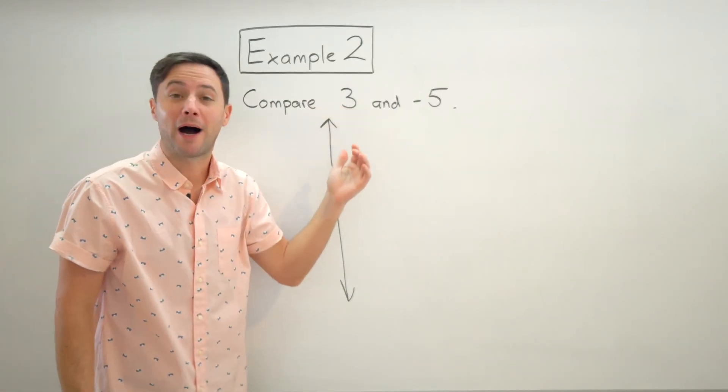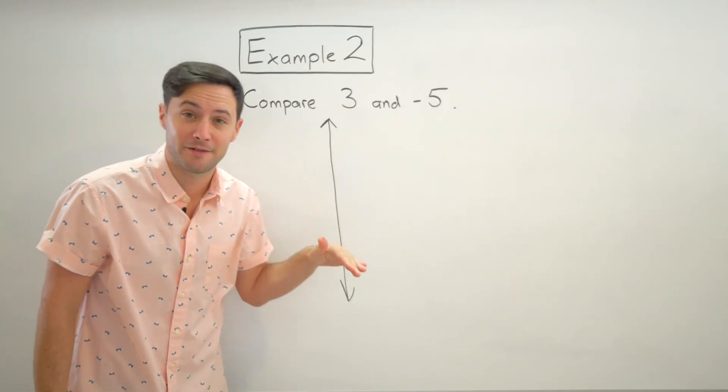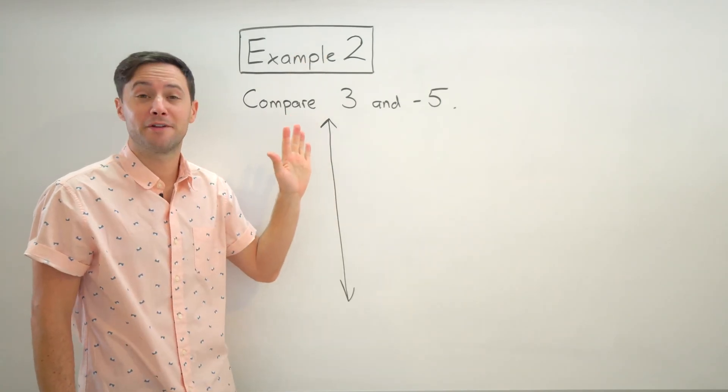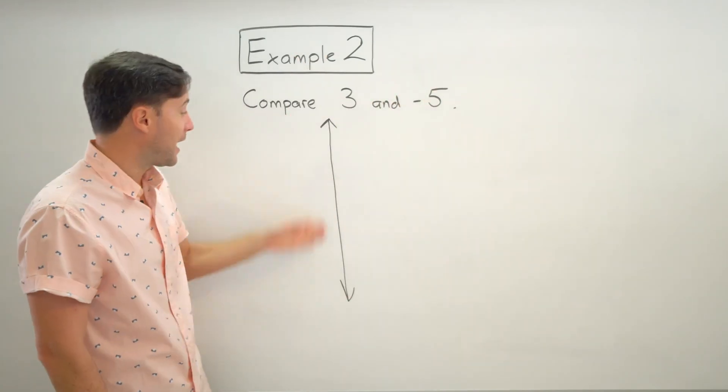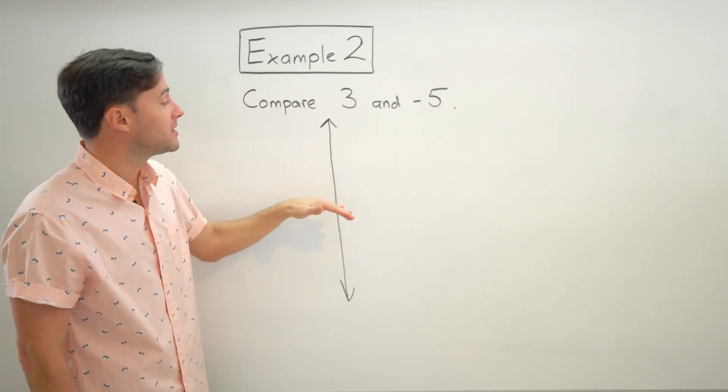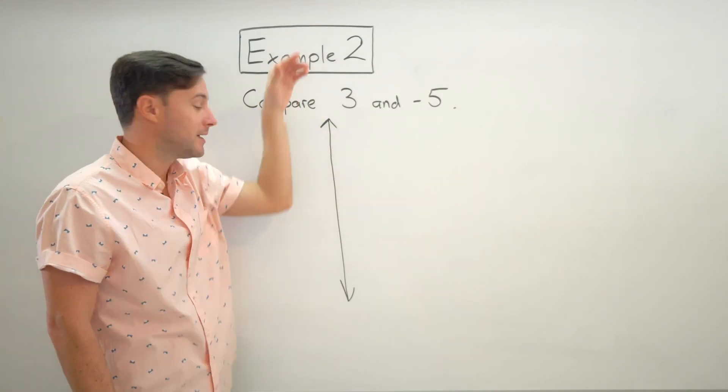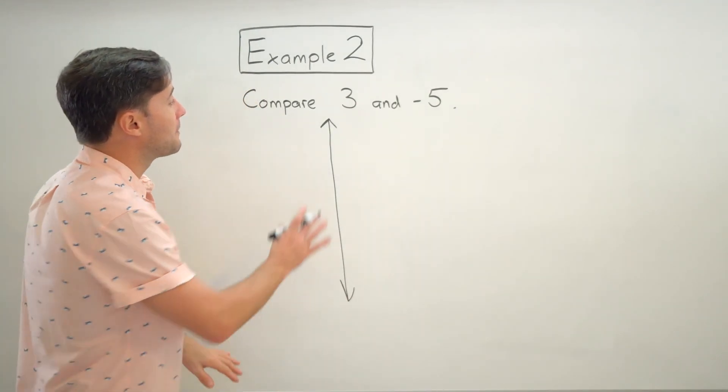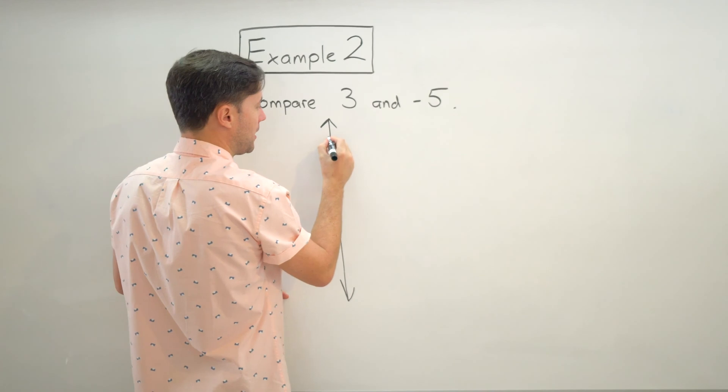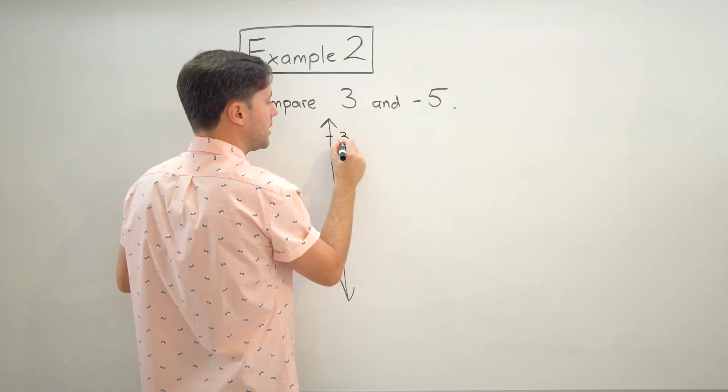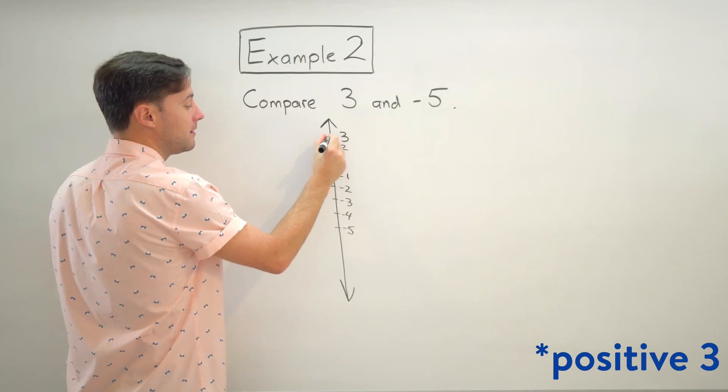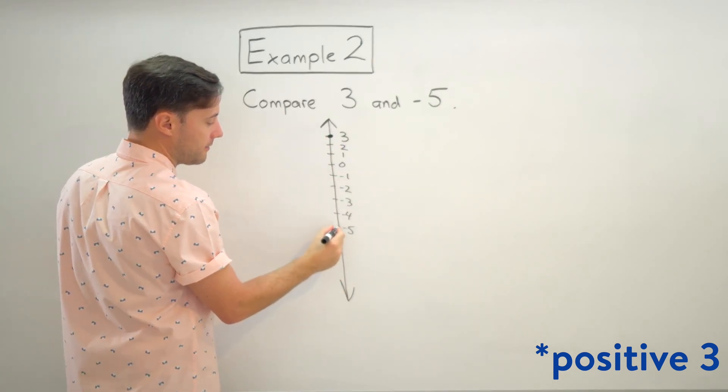I'm going to, I know three is positive. Now the positive integers are going to be above instead of positive integers to the right of zero. Now we have a vertical number line. Positive integers are above zero. Negative would be below. All right. So I'm going to start with three all the way at the top of my number line. So there is three. So here is negative three and here is negative five.